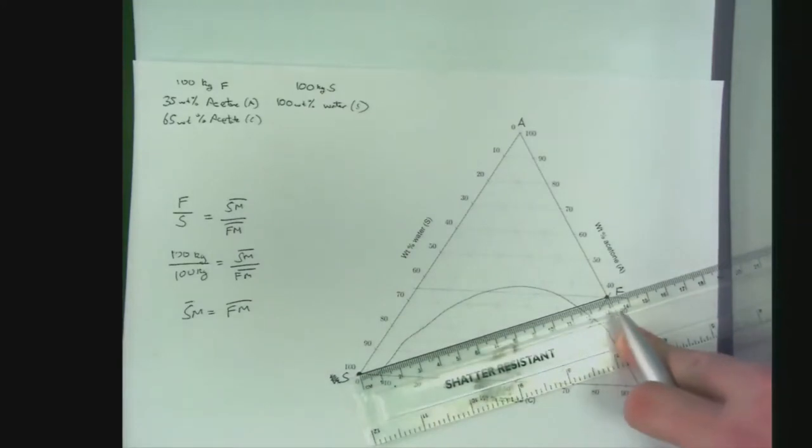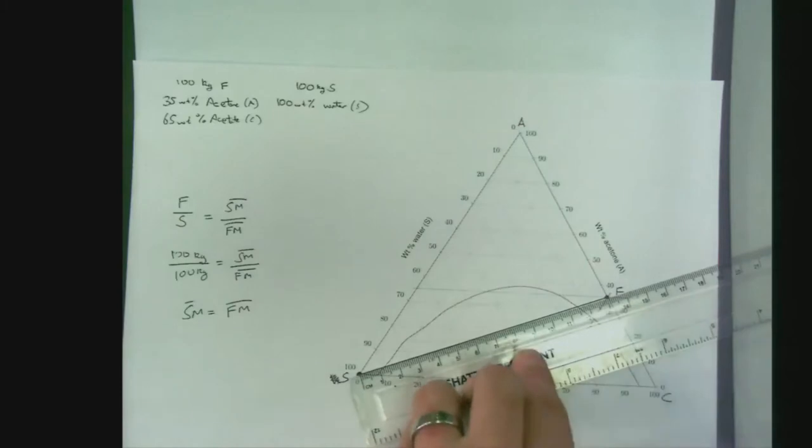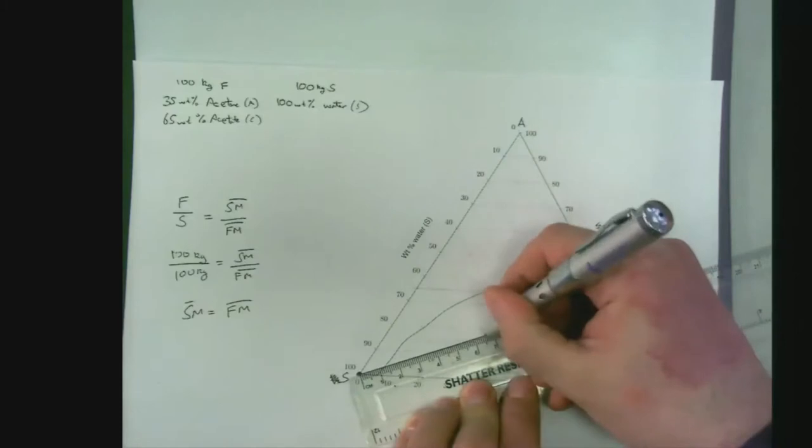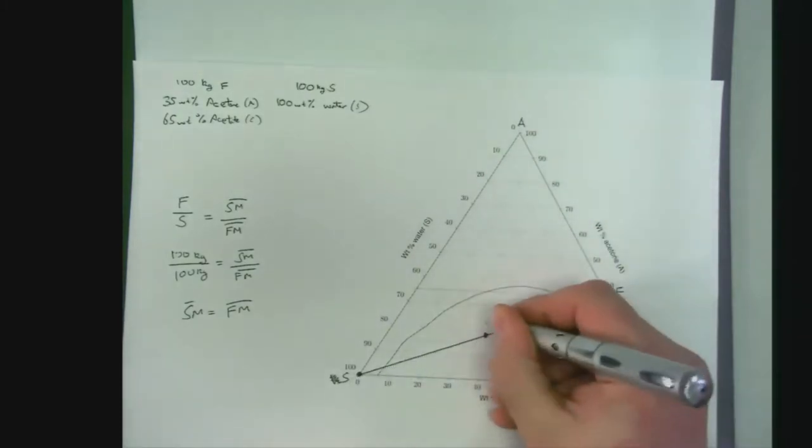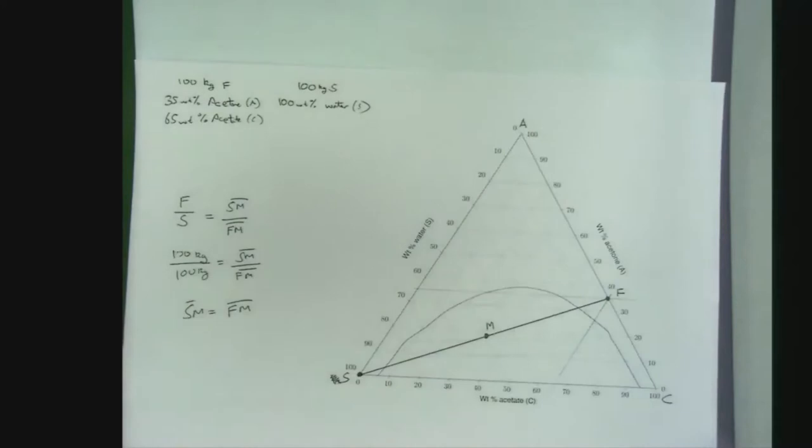So, halfway along the length of 13 centimeters is 6 and a half centimeters. We can just read that off onto our line and locate our mixed composition on the ternary phase diagram.